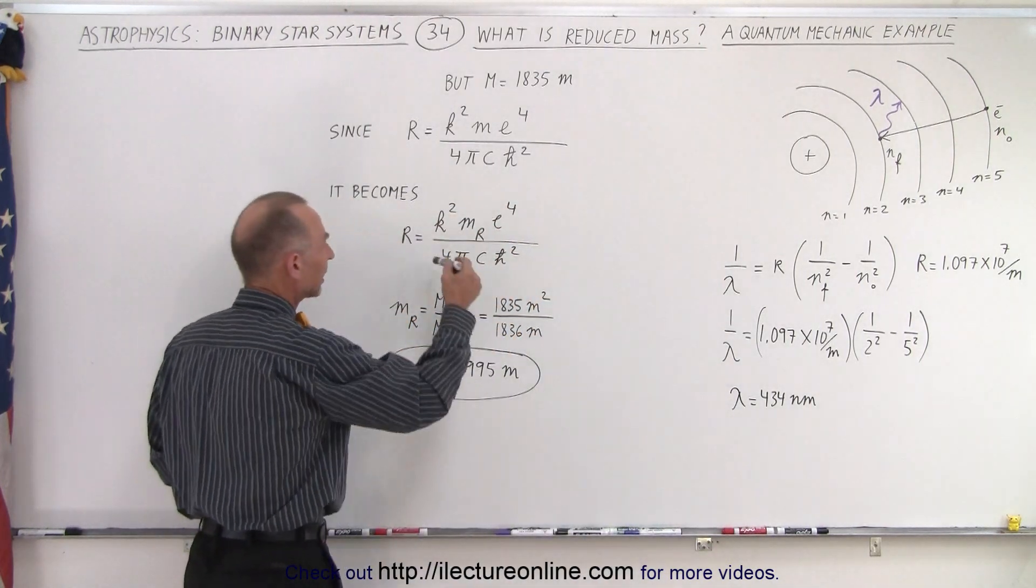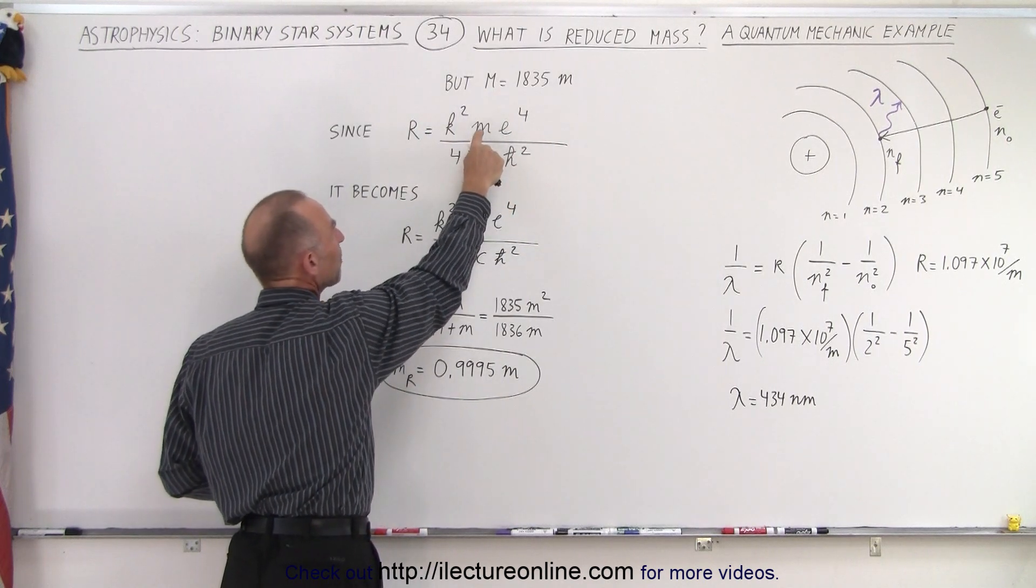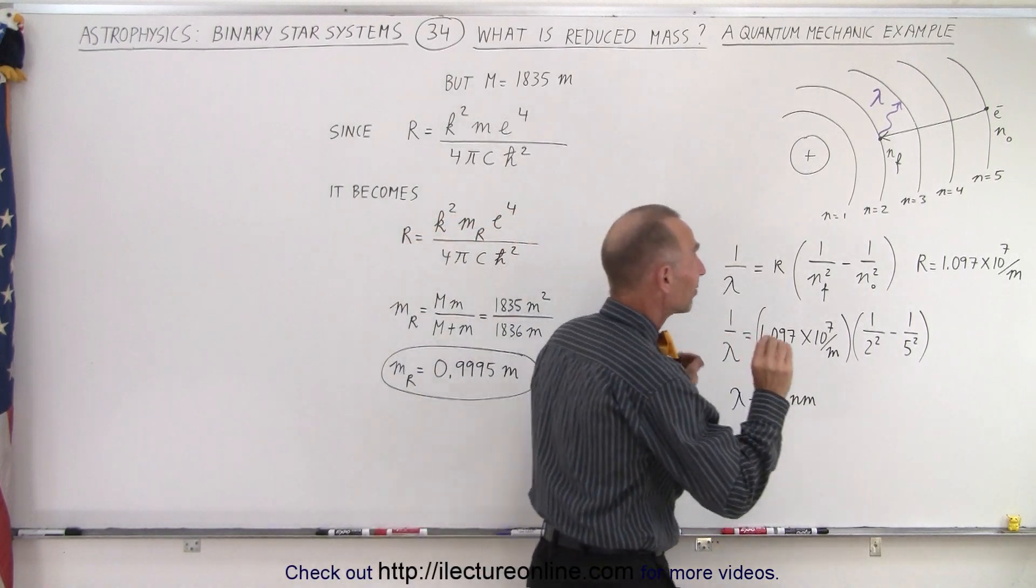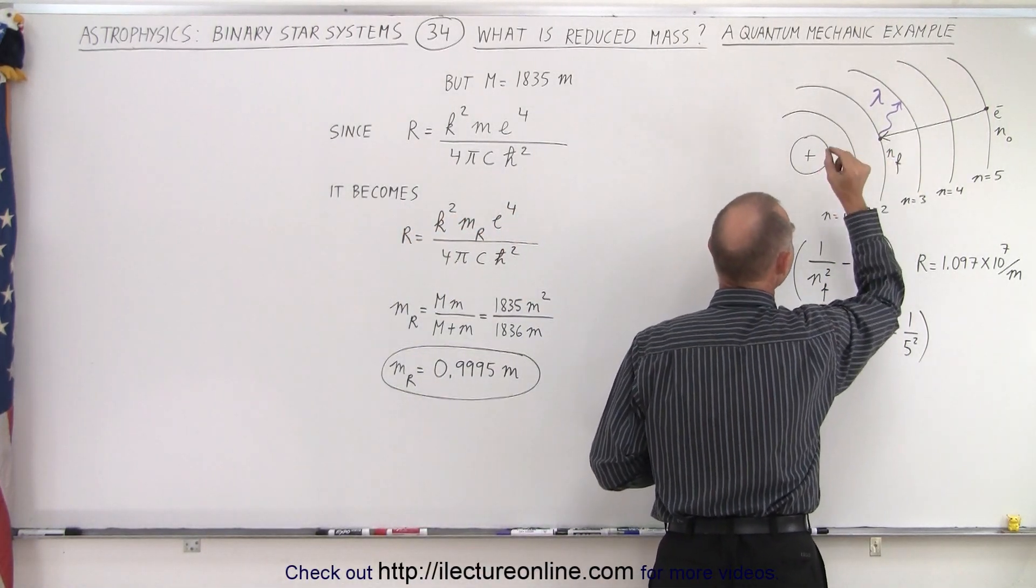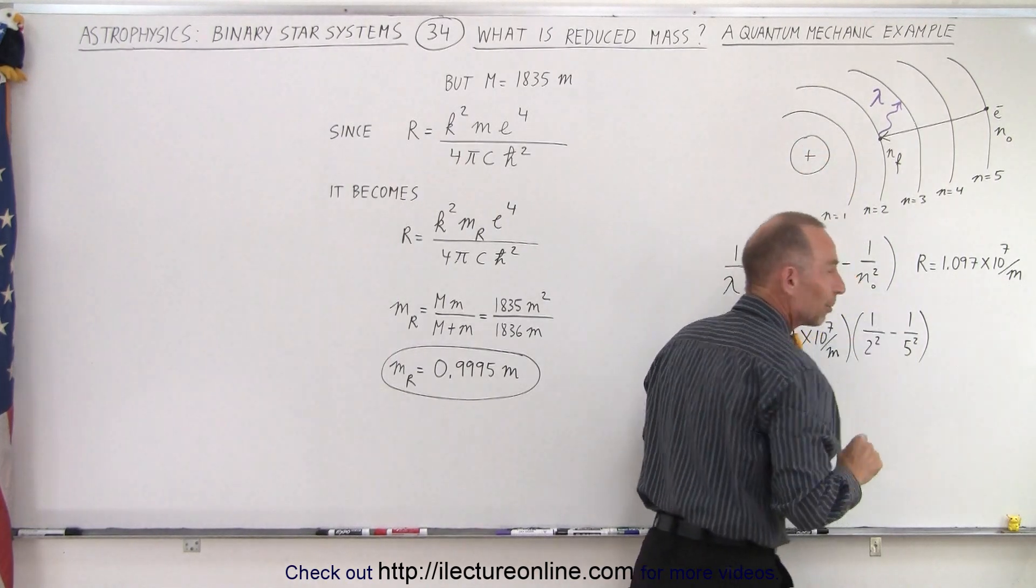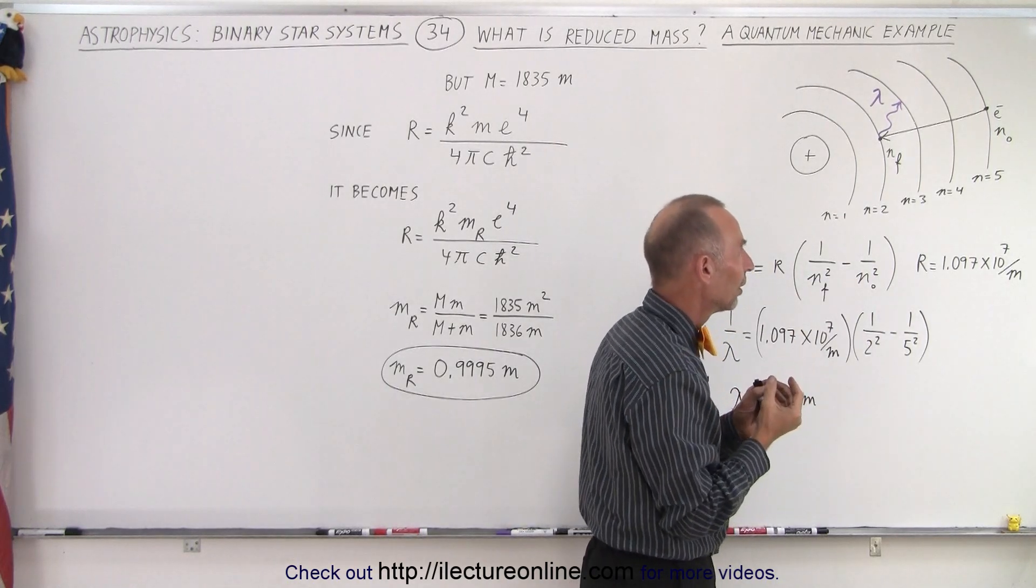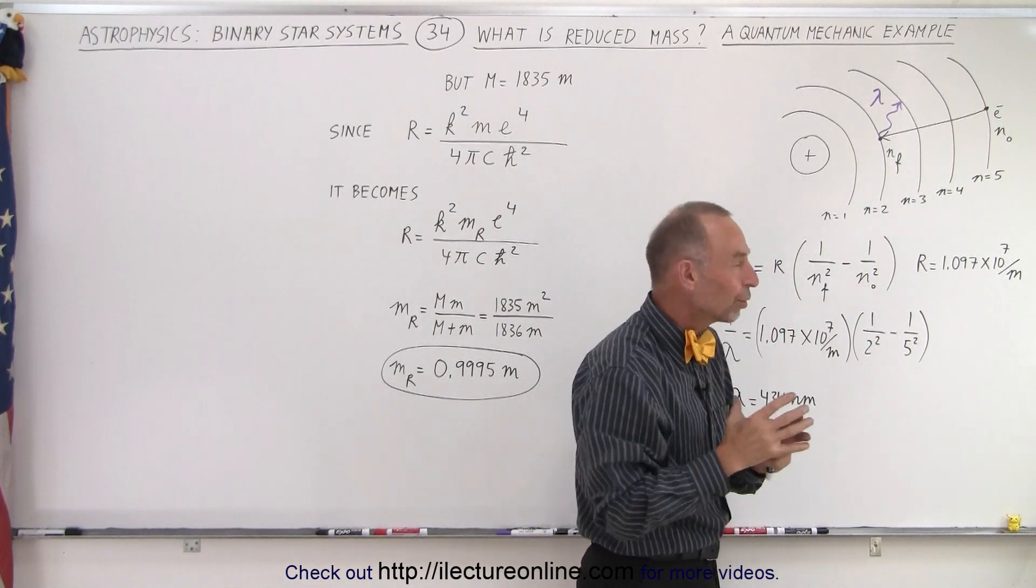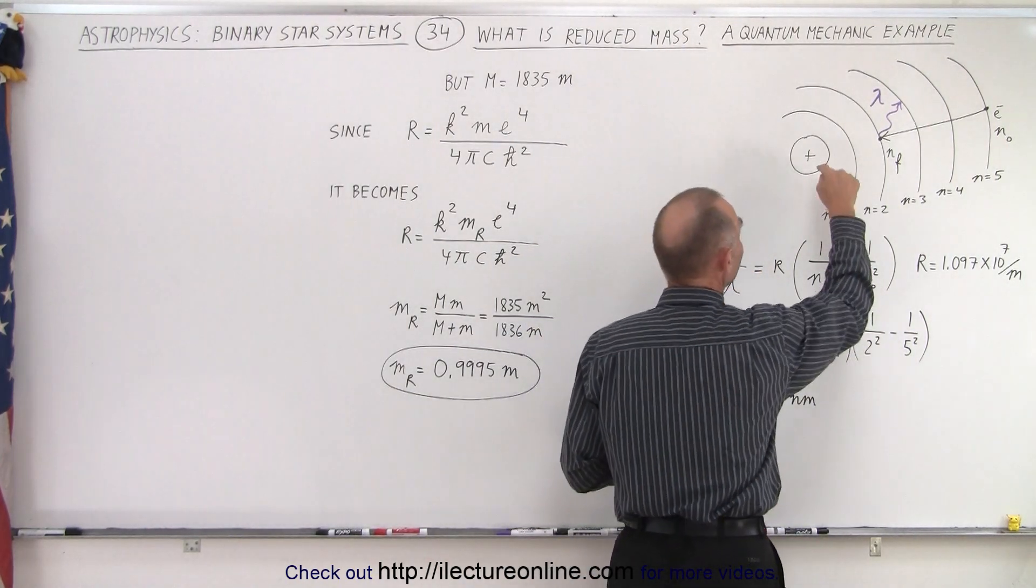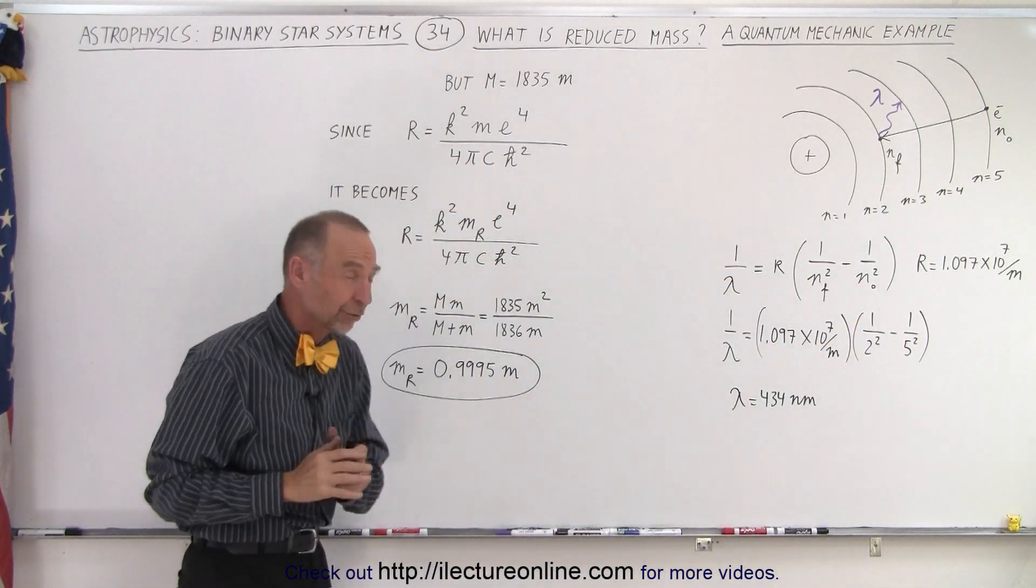The Rydberg constant can be calculated like this. Note that it includes the mass of the electron. But since the barycenter between the electron and the proton is not exactly at the center of the proton but slightly away such that the proton actually moves as well as the electron spins around it, there must be some difference between what we get and what we expect if we purely think that the center of the proton is exactly the center of the orbit of the electron, which of course it's not.